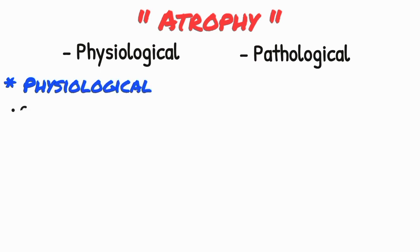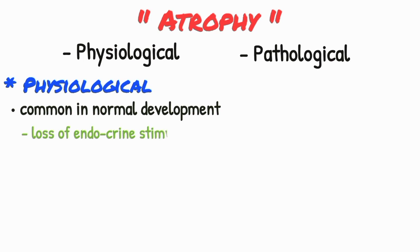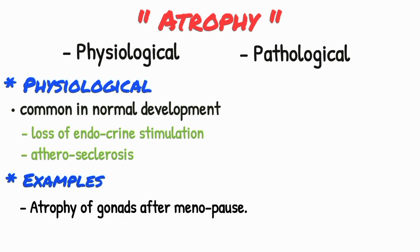Atrophy can be physiological or pathological. Physiological atrophy is common during normal development, which could be due to loss of endocrine stimulation or aging. For example, atrophy of gonads after menopause and atrophy of brain with aging.